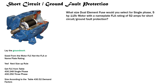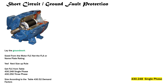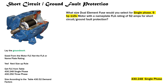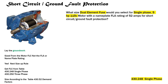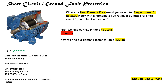What size dual element fuse would you select for a single-phase, five horsepower, 115 volt motor with a nameplate FLA rating of 52 amps for short circuit ground fault protection? First we identify it's single-phase, five horsepower, 115 volts, and a dual element fuse. We find our FLC in table 430.248 — on the left side for horsepower, across the top for voltage — and our FLC is 56 amps.